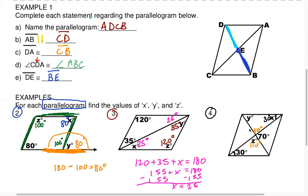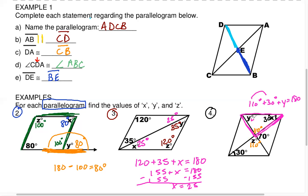Note that this checks out: 70 plus 110 is 180. I also have vertical angles, so if I have 110 here, I have 110 on the other side. Finally, how do we find angle Y? Don't forget to always be on the lookout for a triangle. Here you have a triangle — and triangles always equal 180 degrees. So 110 plus 30 is 140, and 140 plus Y equals 180, meaning Y is 40 degrees.